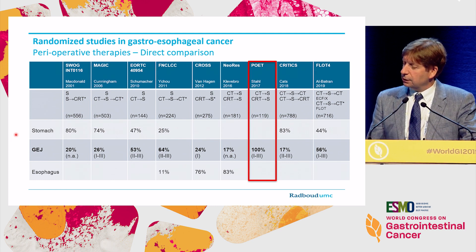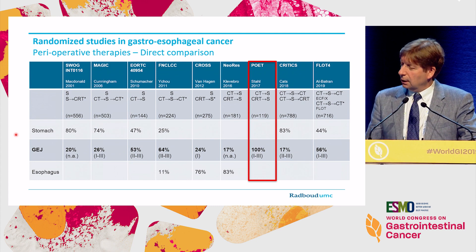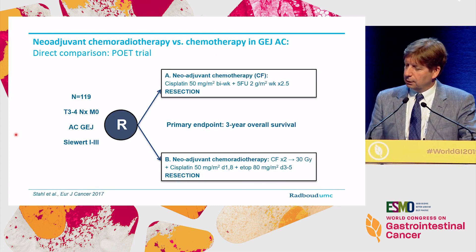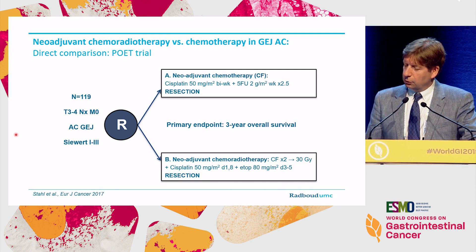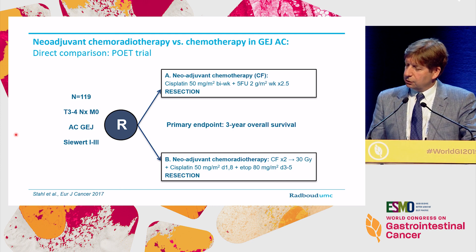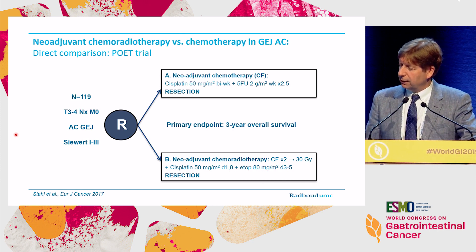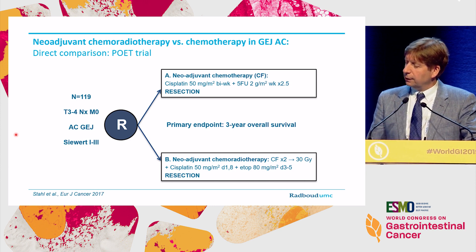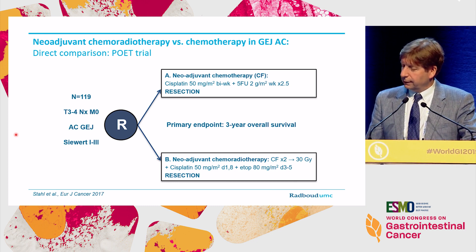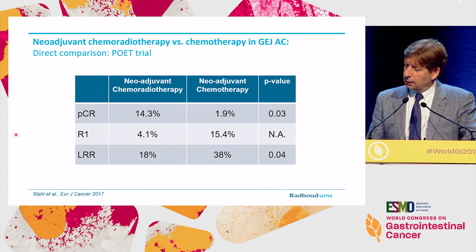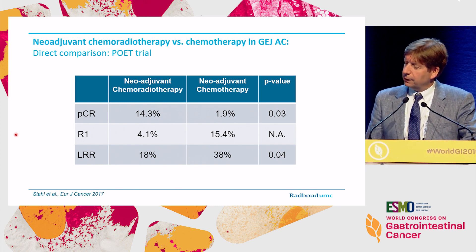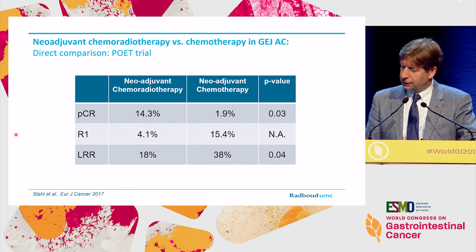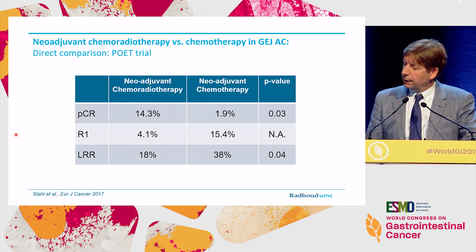There is one study that included only GEJ junction tumors: the POET study by Stahl. All patients had a Siewert type 1 or type 2; there were no type 3 patients. This trial randomized patients between neoadjuvant chemotherapy with cisplatin and 5-FU versus neoadjuvant chemoradiotherapy with a relatively low dose of 30 Gray. The pathological complete remission rate was significantly higher in the neoadjuvant chemoradiotherapy arm. R1 resections were also lower in the chemoradiotherapy arm compared to the chemotherapy arm.